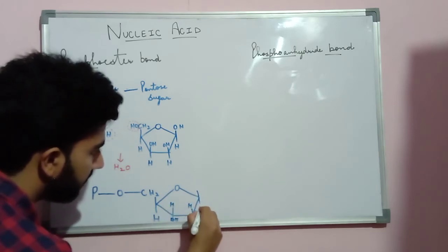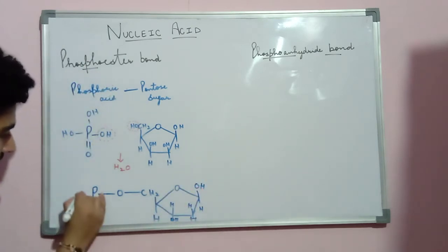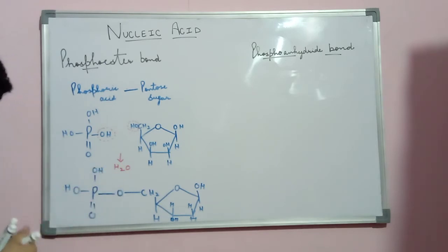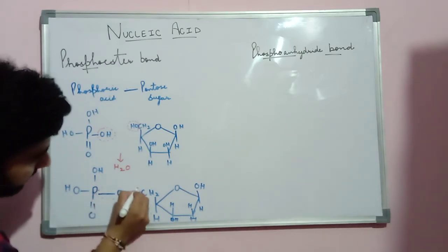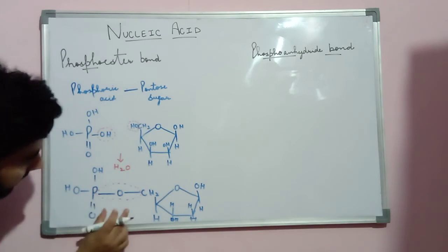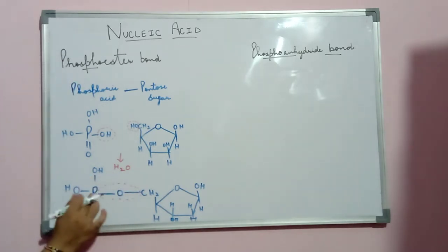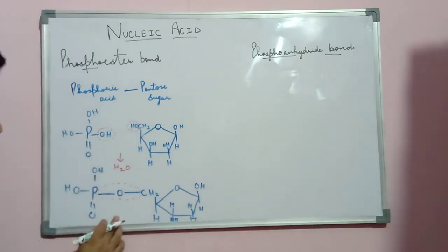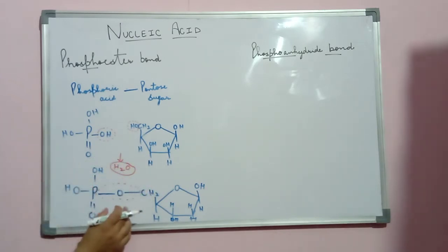The bond formed between the phosphate group and the sugar molecule is known as the phosphoester bond. This is an ester bond formed with the phosphate group, so it is known as the phosphoester bond, in which a single water molecule releases out, giving the formation of the phosphoester bond.